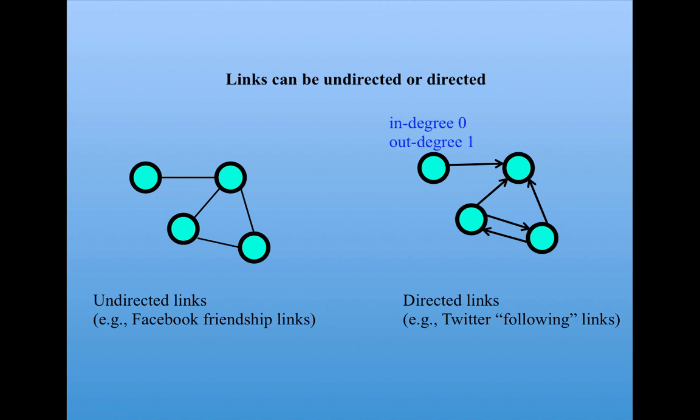Similar to the notion of degree, in a directed graph or network, we would have the notion of in-degree, which is the number of links coming into a node, and out-degree, the number of links going out of a node. This node here has an in-degree of 0, no links coming into it, and an out-degree of 1. Similarly, this one has an in-degree of 3, three links coming into it, and an out-degree of 0.